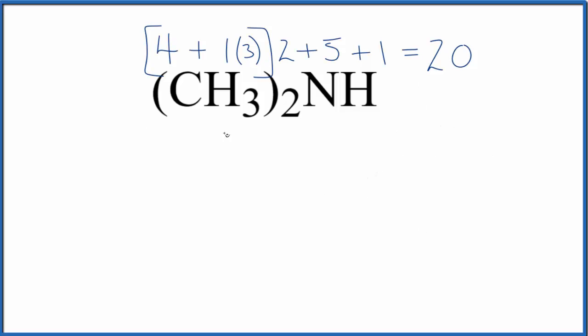To write the Lewis structure, if we look at this, we have this CH3 group right here. This is a methyl group. In fact, we have two of them, and they're attached to the nitrogen. So we're going to put the nitrogen in the center, put a methyl group on each side, and then add the hydrogen on the central nitrogen.